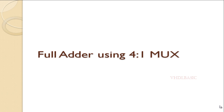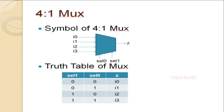This is the 4-to-1 mux. If you see the simple diagram, i0, i1, i2, i3, select0, and select1 are the inputs, and Z will be the output of this 4-to-1 mux.